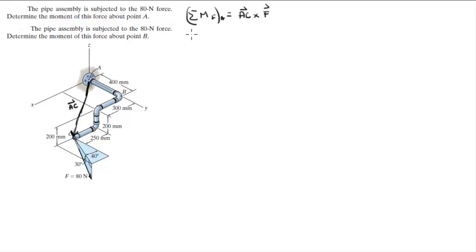So first let's find all the points involved. A sits at the origin, 0i plus 0j plus 0k. B sits at 0i plus, we're going to convert all these distances into meters because newton meters is a common unit and newton millimeters is not. So this is 0.4 meters, this is 0.3 meters, this is 0.2 meters, this is 0.2 meters,